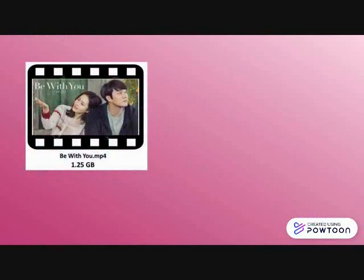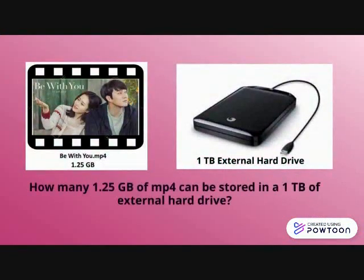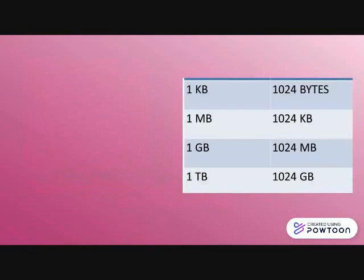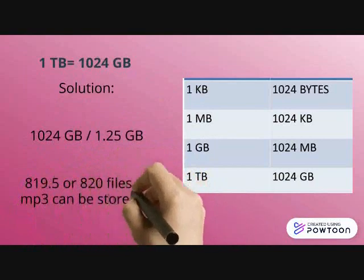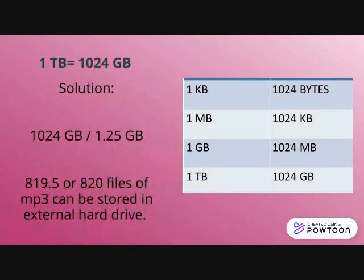Now it's your turn. How many 1.25 GB of video can be stored in a 1 TB external drive? For a simple solution, remember the conversion table. Since 1 TB is equal to 1,024 GB, divide 1,024 GB by 1.25 GB. There are 820 files of MP4 videos that can be stored in an external hard drive. Please remember that before you divide the two given numbers, they should be in the same unit. If not, use the conversion table first to convert its unit.